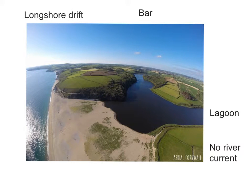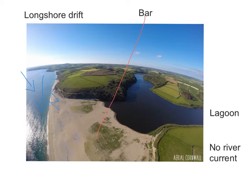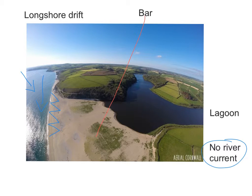And finally, here's a nice photo of a bar. This is the bar here — it's caused by deposition and longshore drift, coming in this direction as a result of a prevailing wind from here. We have an extension of the headland through deposition, and this time there is no river current stopping the extension of the spit, so it extends all the way from this headland to that headland, cutting off the water behind. The water behind is known as a lagoon.